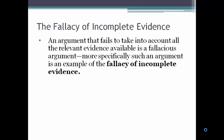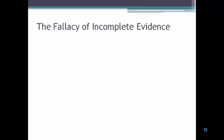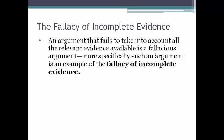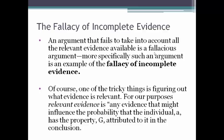More specifically, such an argument is an example of the fallacy of incomplete evidence. In our previous case, if we had available to us both that Elena was a freshman at State University and a member of the Foreign Students Club, and we didn't take one of those pieces of information into account, we would have been committing the fallacy of incomplete evidence. One of the tricky things is figuring out what evidence is relevant. Relevant evidence is defined as any evidence that might influence the probability that an individual A has the property G attributed to it in the conclusion. The trick is figuring out which pieces of information might influence that probability. Sometimes it's easy to tell when the rule of total evidence hasn't been followed and the resulting argument is fallacious.